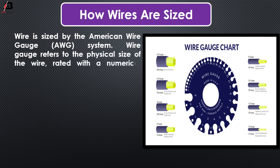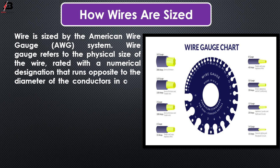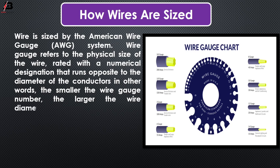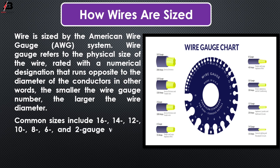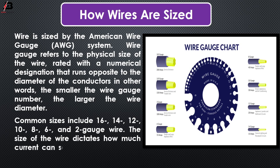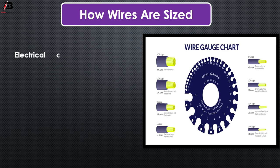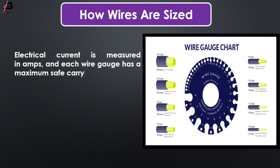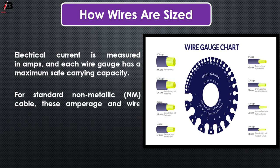Oil gauge refers to the physical size of the oil, rated with a numerical designation that runs opposite to the diameter of the conductors. In other words, the smaller the oil gauge number, the larger the oil diameter. Common sizes include 16, 14, 12, 10, 8, 6, and 2 gauge oil. The size of the oil determines how much current can safely pass through it. Electrical current is measured in amperes, and each oil gauge has a maximum current-carrying capacity.